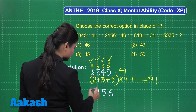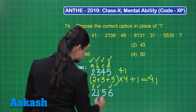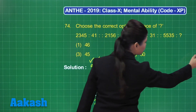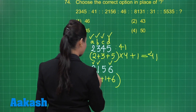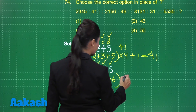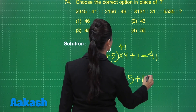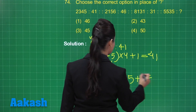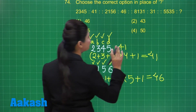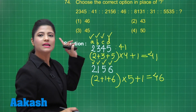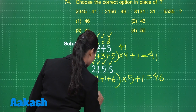In a similar manner, we have the second number. Following the same pattern, consider the first, second, and fourth digits: 2 plus 1 plus 6. Next, multiply the third number which is 5, and add 1 to it. This gives 9 into 5 = 45, plus 1 = 46. That confirms the pattern being followed in each pair.